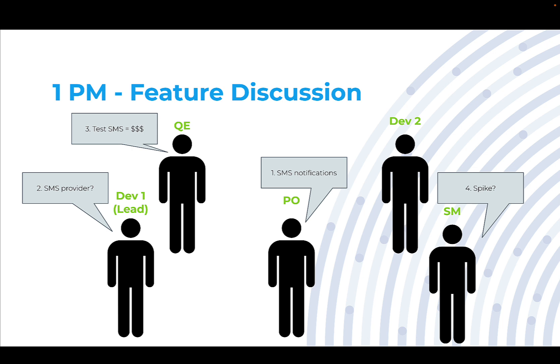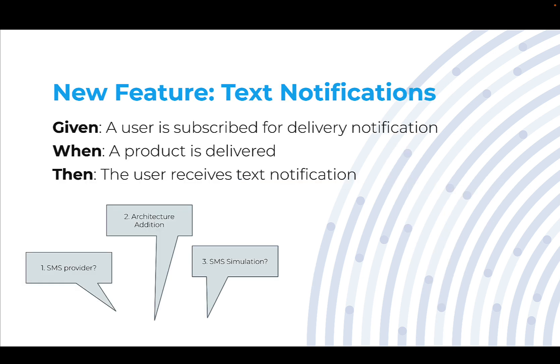The scrum master hearing this says, this sounds like a lot of work. We probably should have a spike. A spike is agile terminology for what is a research project. That's because we're going to need to do a little bit of a research project to figure out how much work is actually required.